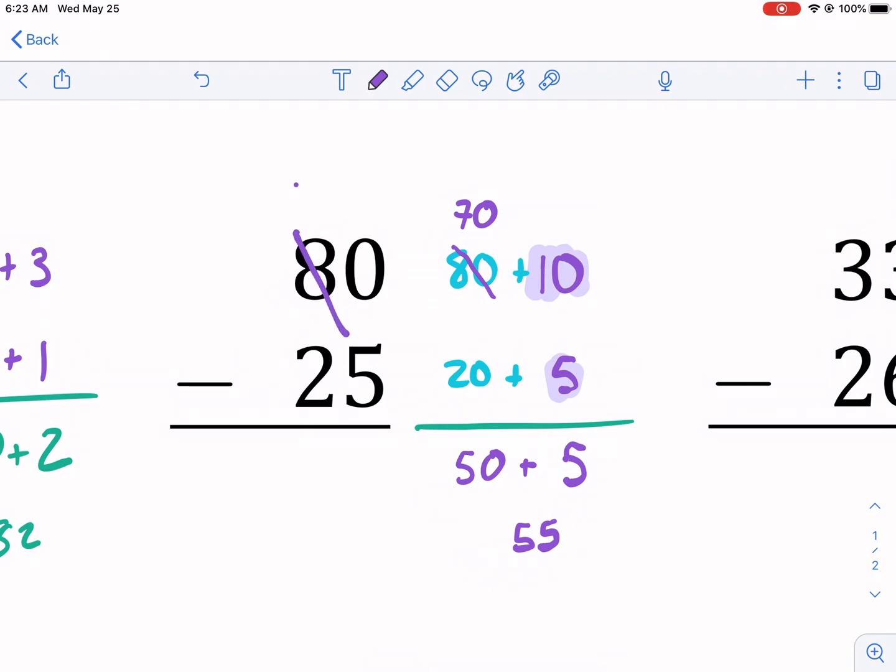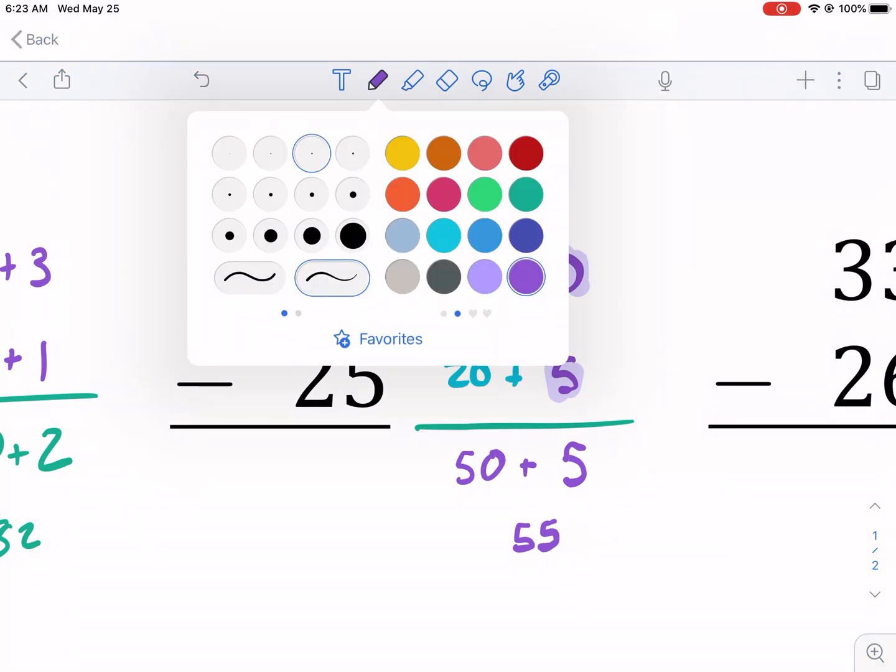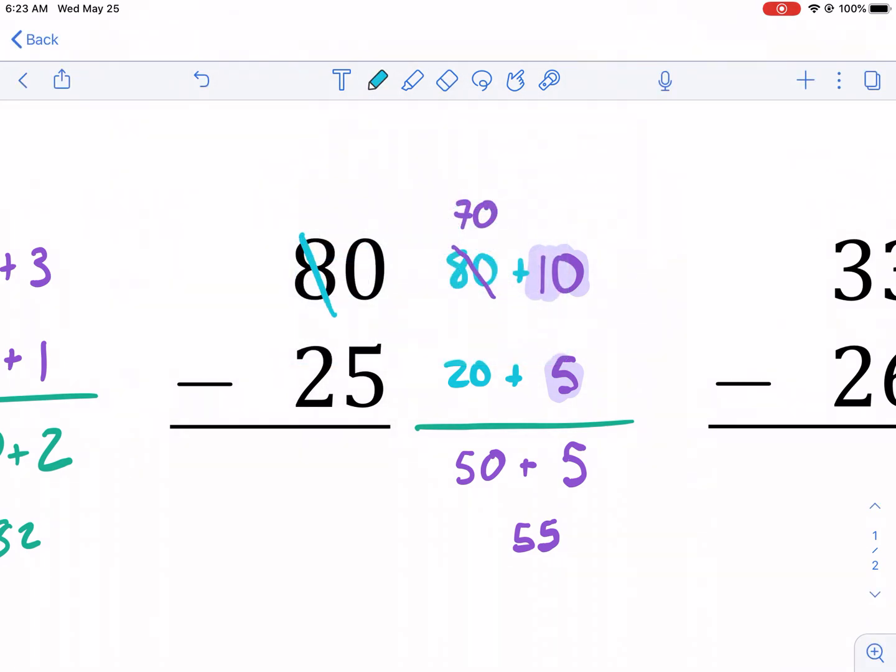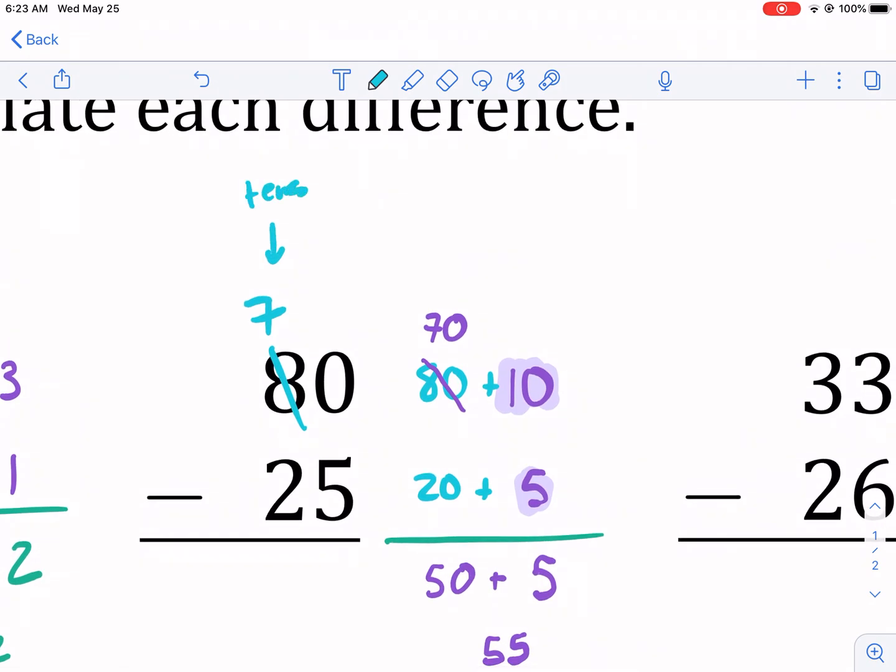So we are going to borrow from this 8, and we're going to turn it into a 7. Now, the reason why I'm just putting the 7 there is because, keep in mind, this number represents 80. And that 7 is still in the tens place. So it still represents 70, not just 7.